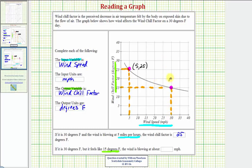So, as an ordered pair, this would be the point 30 comma 15. So, to complete our sentence, if it's 30 degrees Fahrenheit, but it feels like 15 degrees Fahrenheit, meaning this is the windchill factor, the wind is blowing at about 30 miles per hour.